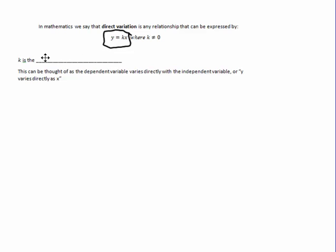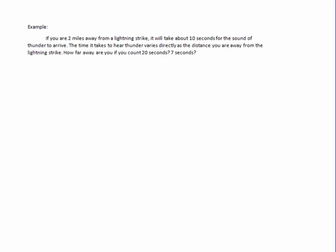And k, in this instance, k is called the constant of variation. So this can be thought of as the dependent variable varies directly with the independent variable, or y varies directly as x. And let's see what that tells us here on this problem.